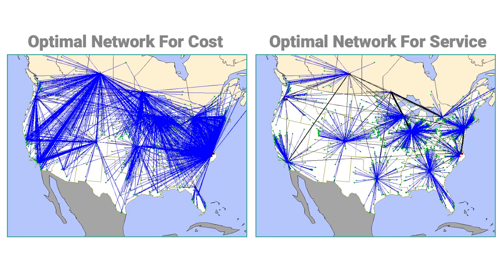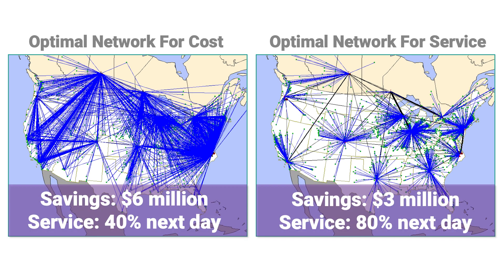On the visual side, when you look at the output you see two different maps — these are solutions to a network design problem. There's no one right answer. One of these solutions is optimal for cost; it's much cheaper, with longer blue lines representing shipments from the warehouses to the customers.